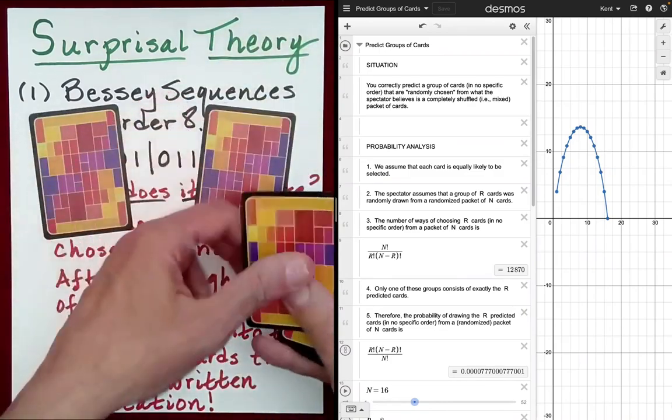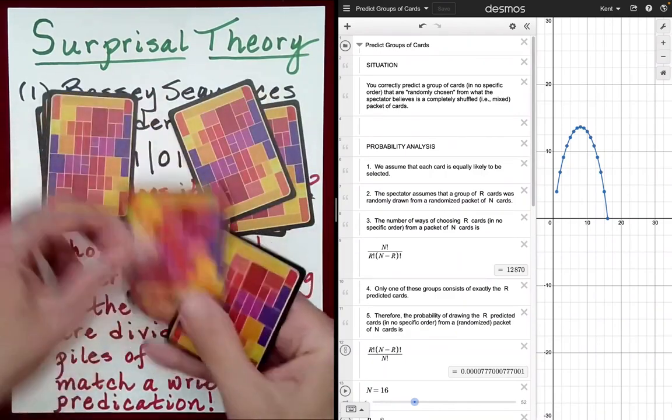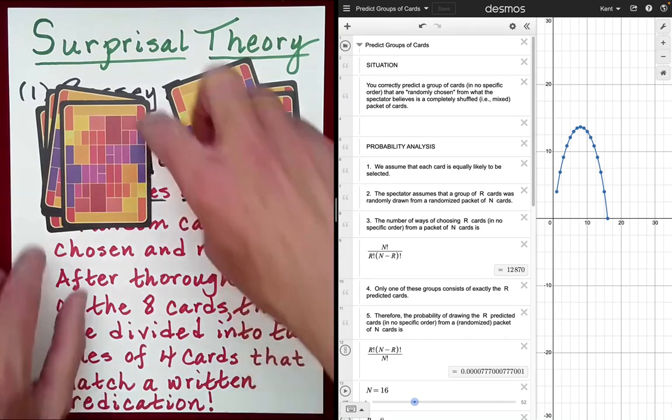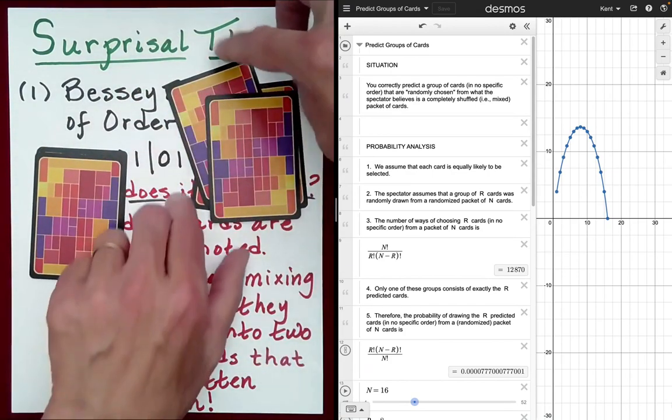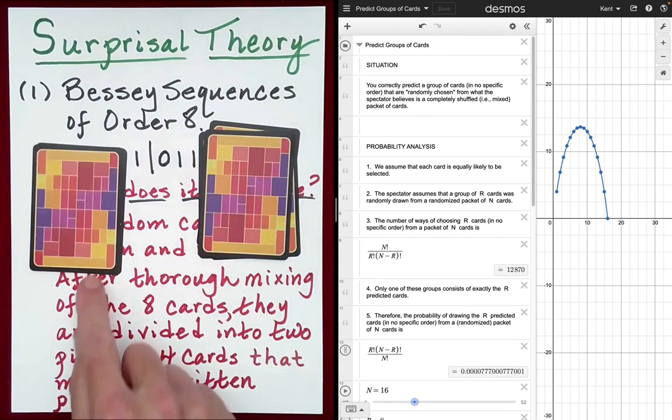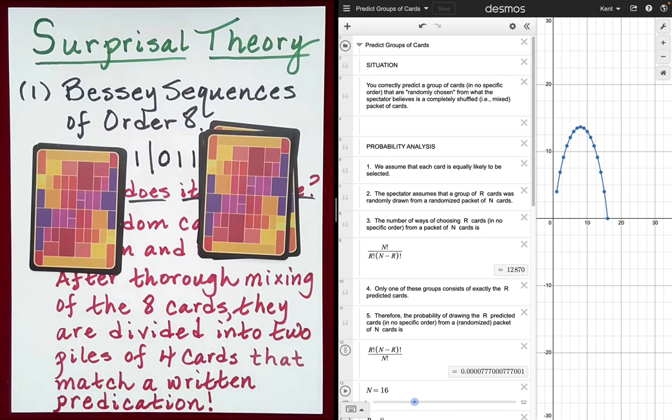These eight cards are divided into two piles of four cards. The dealing out into the two piles, if done correctly, will still look like a random dealing out of the cards into two piles of four from the perspective of the spectator. But nonetheless, when these cards are revealed within each pile of four, it will perfectly match the groupings that you've made note of on your piece of paper. And that's after tremendous mixing and randomization of the cards has occurred.